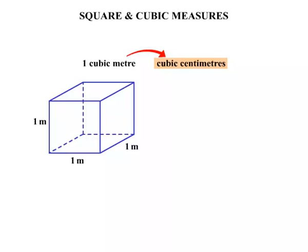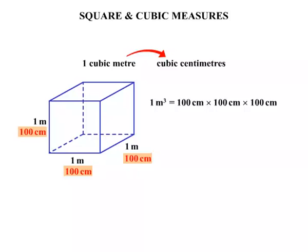Now in terms of cubic centimetres we write down the lengths in centimetres. So 1 cubic metre, volume equals length times breadth times height. So let's multiply the 100 centimetres by the 100 centimetres by the 100 centimetres again. And when we calculate that, we get that 1 cubic metre equals 1,000,000 cubic centimetres.